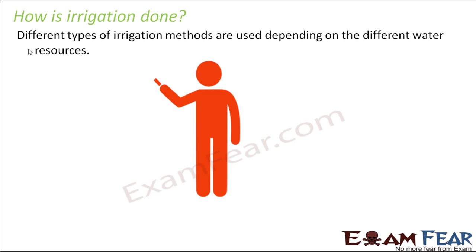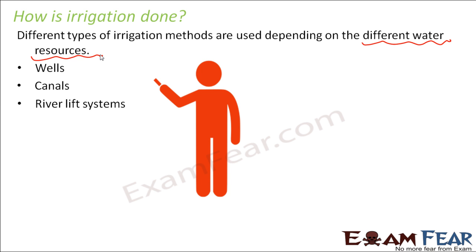Different types of irrigation methods are used depending on the different water resources. Because there has to be some source of water — to water such a big field, we need enough water. There has to be some source from where we will fetch the water. So it could be wells, it could be canals, it could be river lift systems, or it could be tanks. Any of these could act as water resources and can be used as sources for irrigating a particular field.